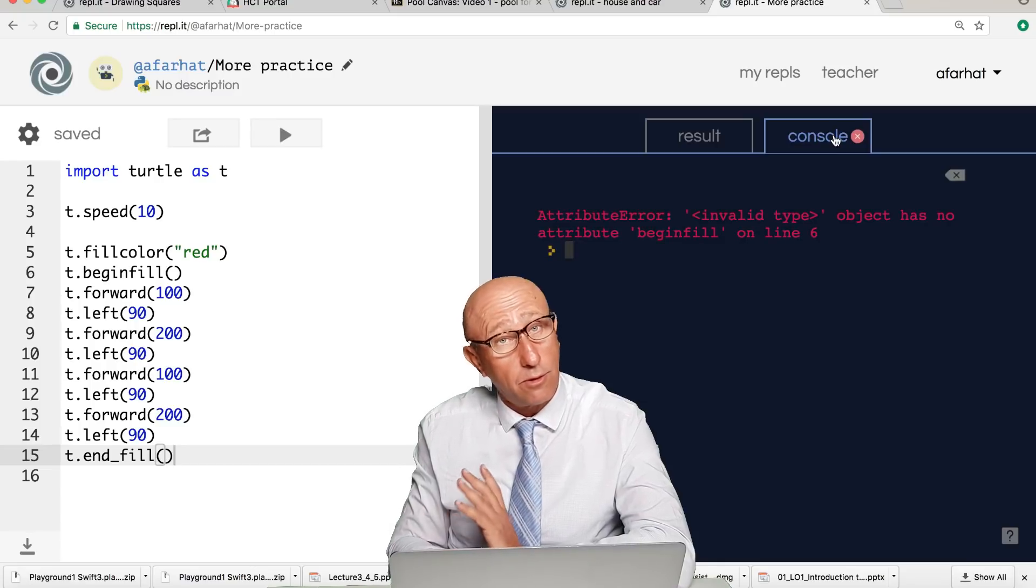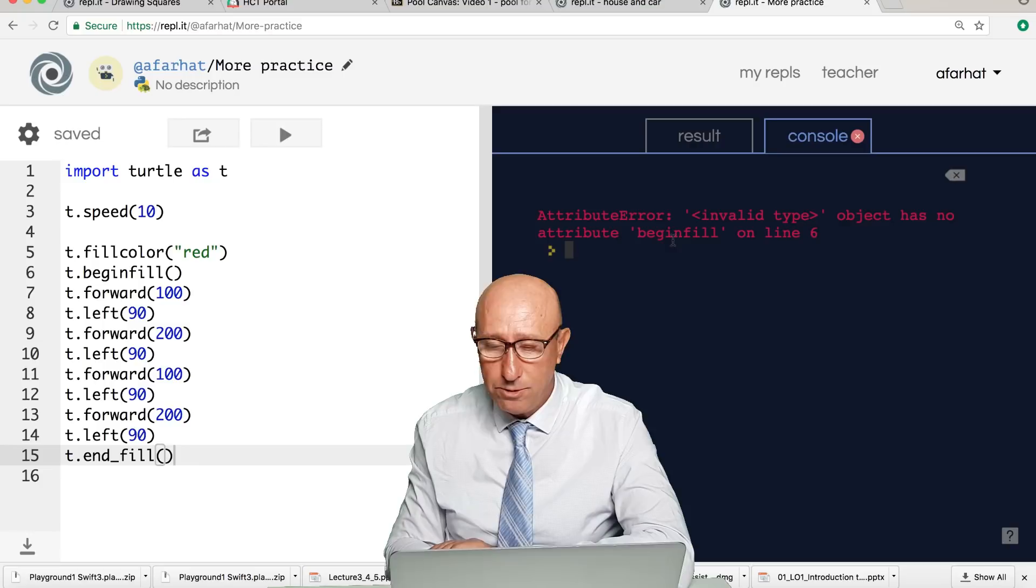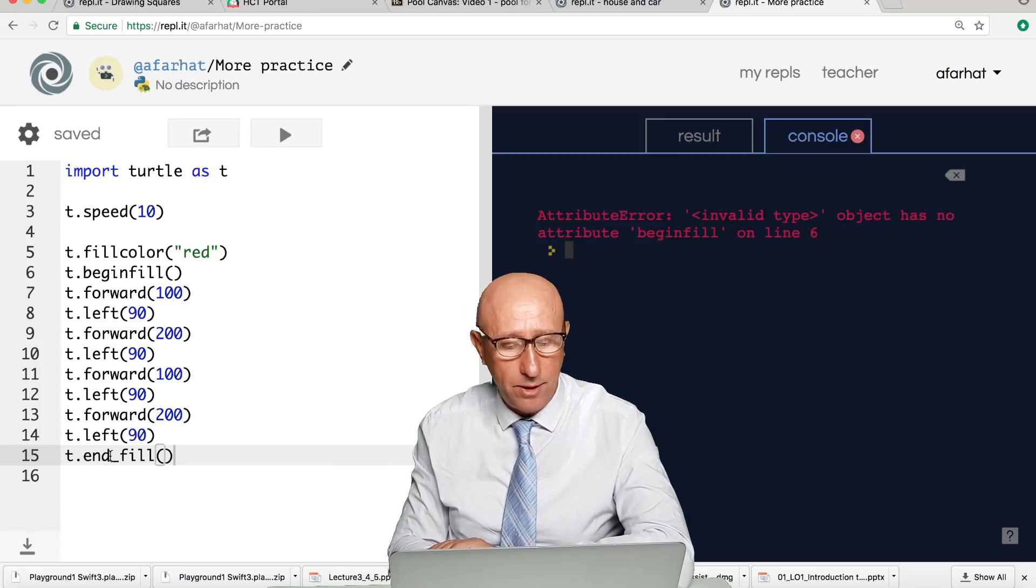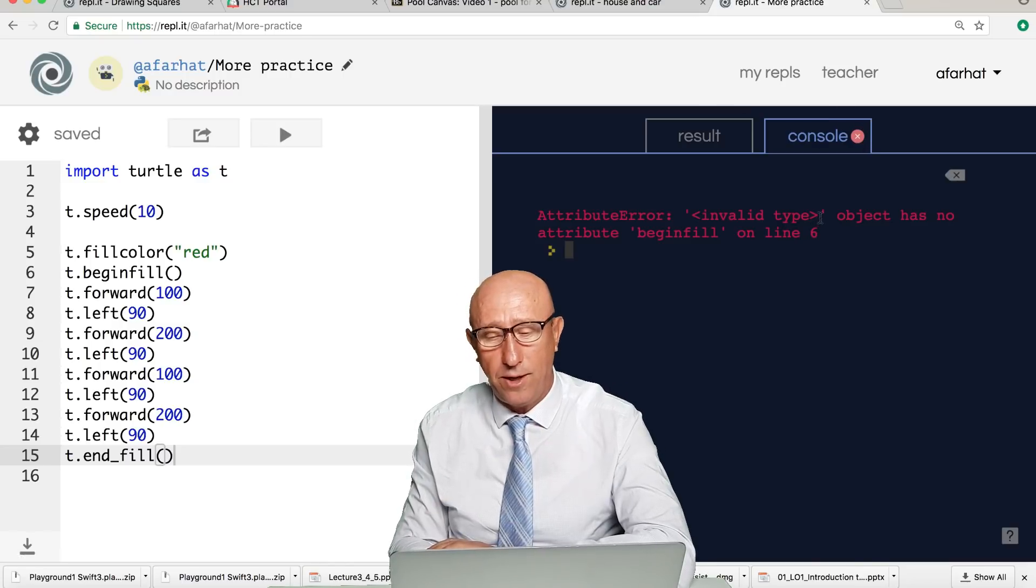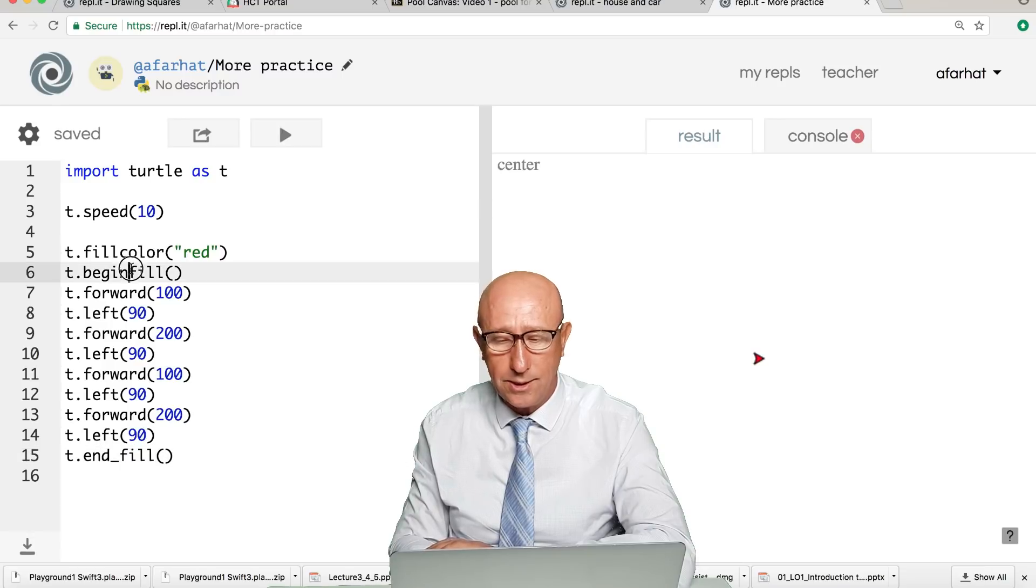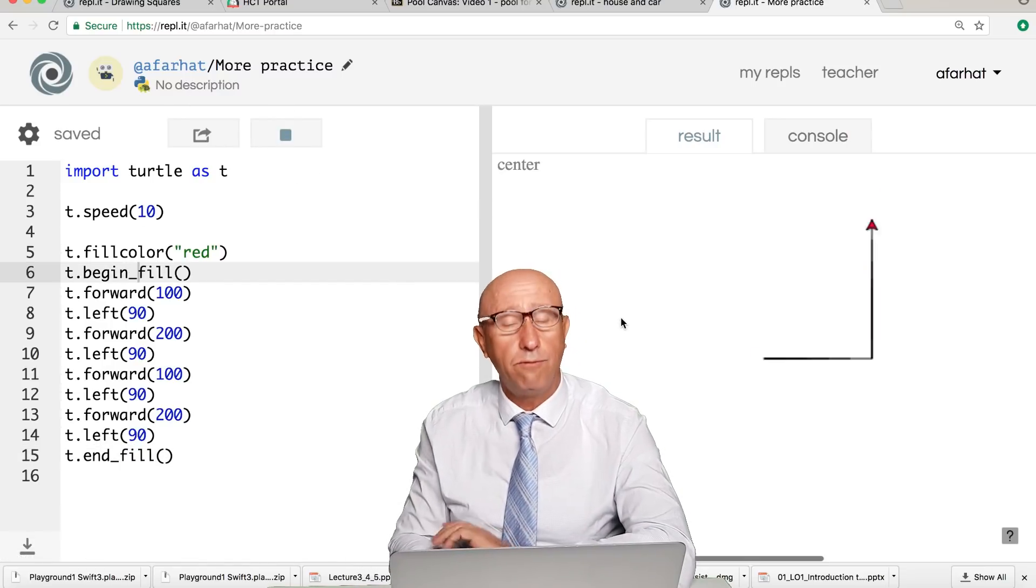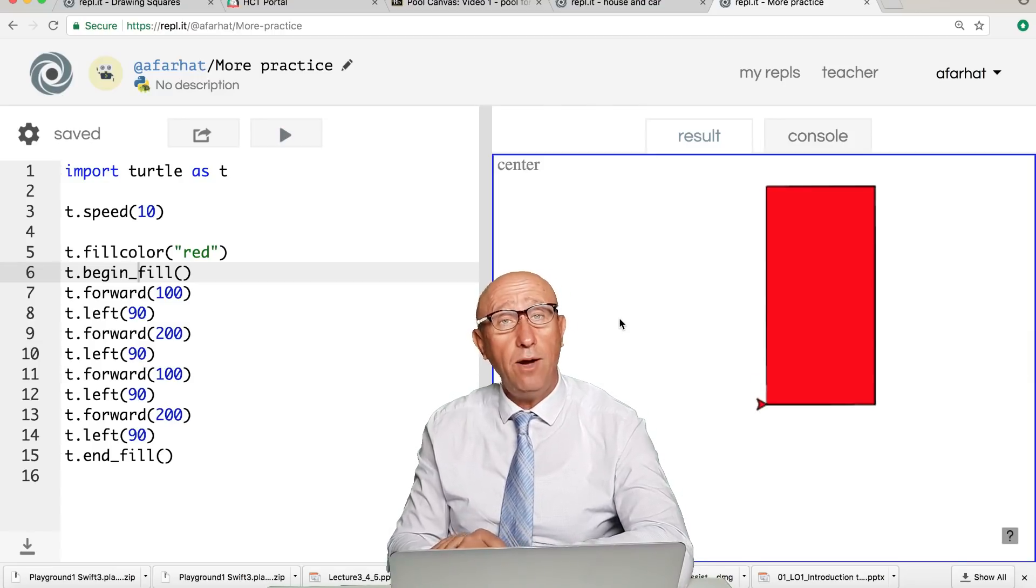Now watch what happens. You draw it. We got an error. That's a good way to find your errors. It says object has no attribute beginfill. So I got a problem. The command is actually begin_fill with an underscore. So it's a good exercise to find problems. What line? Line six. We go back to line six. Begin_fill, it's actually begin_fill with underscore. And now we got that. So now I drew the building.